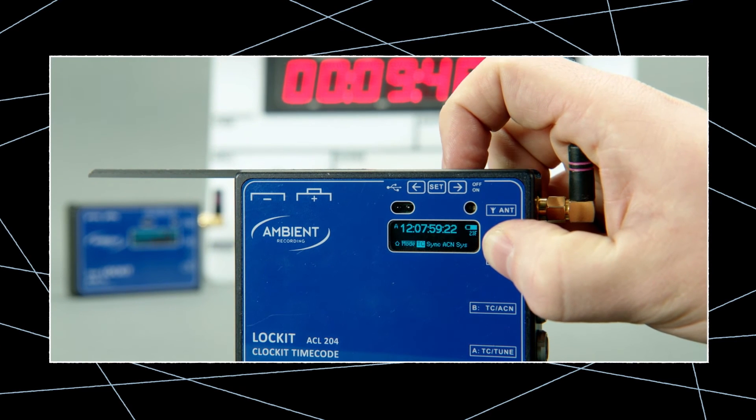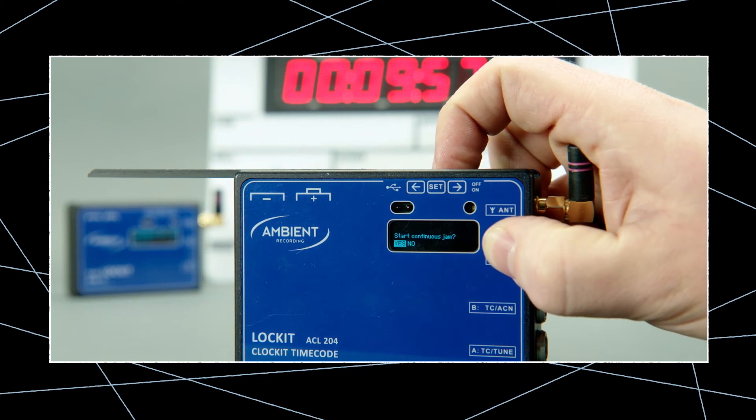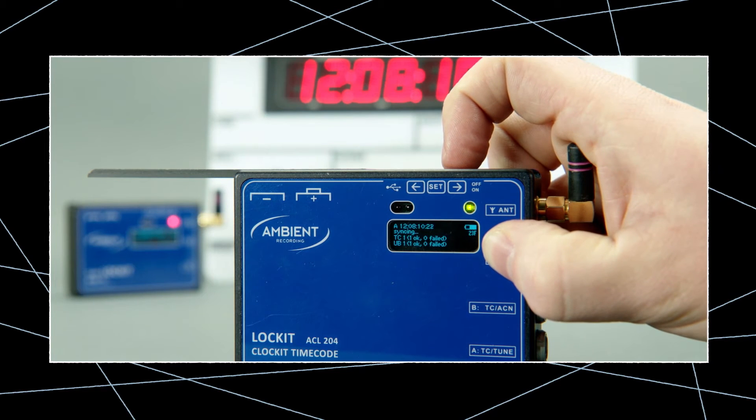With continuous jam, you can use any ACN device as timecode master. As you get started, simply jam the master or manually edit the start timecode. Then go to the ACN menu, jump to the sync menu, and start the C-JAM broadcast.